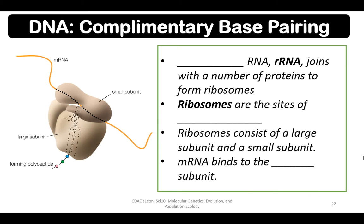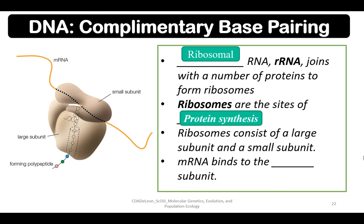Now let's discuss complementary base pairing. Ribosomal RNA or rRNA joins with a number of proteins to form ribosomes. Ribosomes are the site of protein synthesis — that is their main function in the cytoplasm. Ribosomes consist of a large subunit and a small subunit, and mRNA binds to the small subunit.